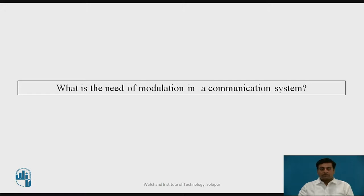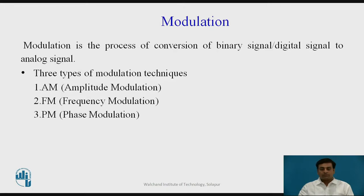What is the need of modulation in a communication system? The answer is we want to make the signal transmission immune to noise, as well as to transmit the signal over greater distances with low losses. That is the need of modulation — that's why we go for modulation of a signal before transmission.